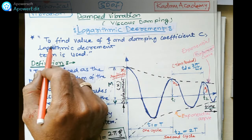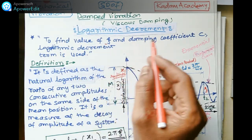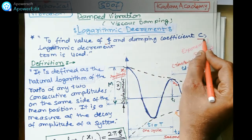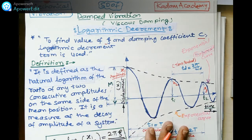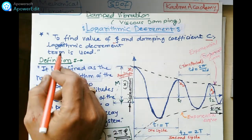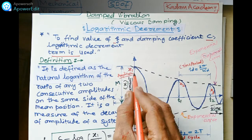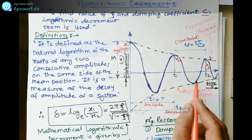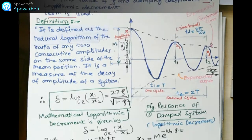To find the value of zeta — that is the damping factor — the damping ratio, and the damping coefficient c, for damped vibration, the logarithmic decrement term is used. The displacement response curve for the damped system is where logarithmic decrement comes into play.